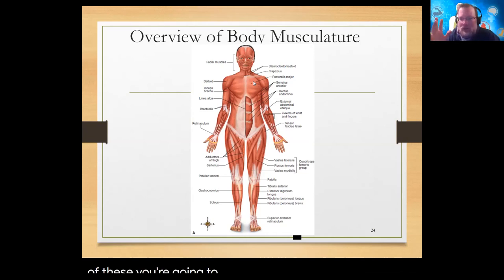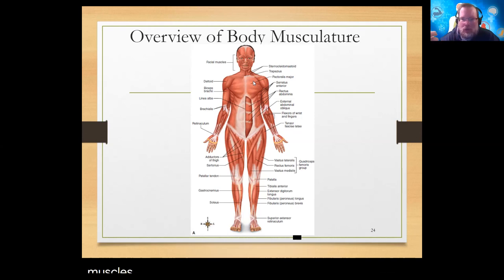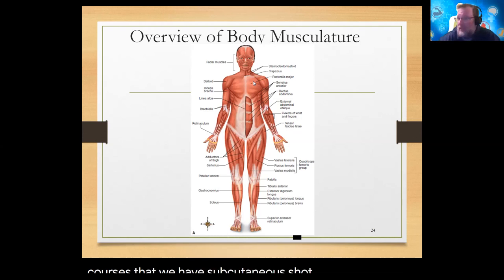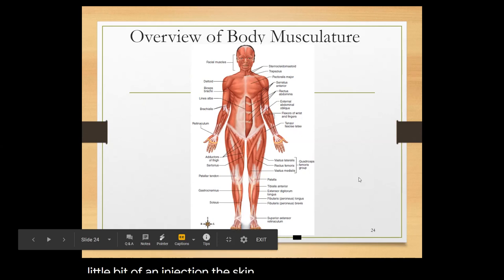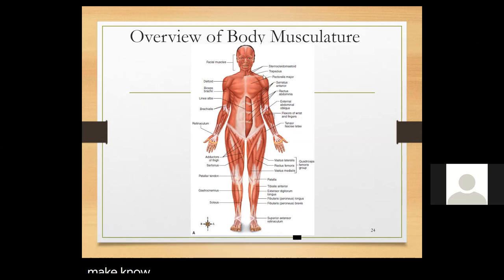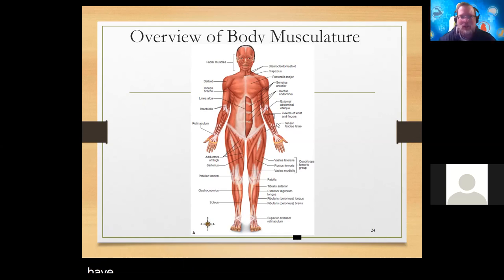Some of these you're going to be giving shots - intramuscular shots - and a lot of times those shots are going to be given in one of two or three different muscles. You'll learn in your clinicals about subcutaneous shots. Some of you, maybe all of you, have had a TB test where they did a little injection just underneath the skin.